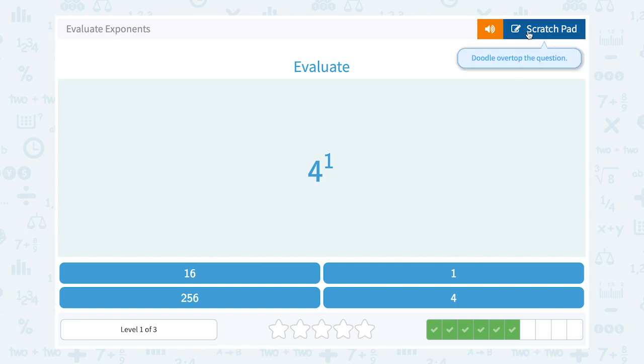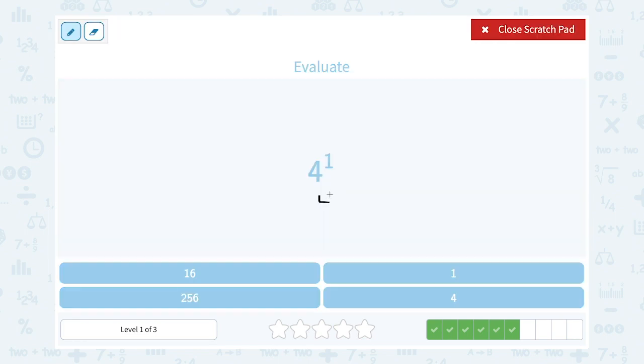Four to the first power. Well, this tells us to write out four one time. So that would just be four.